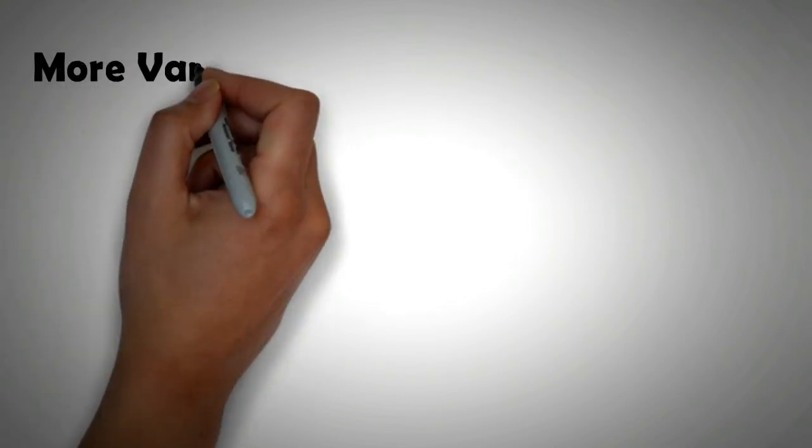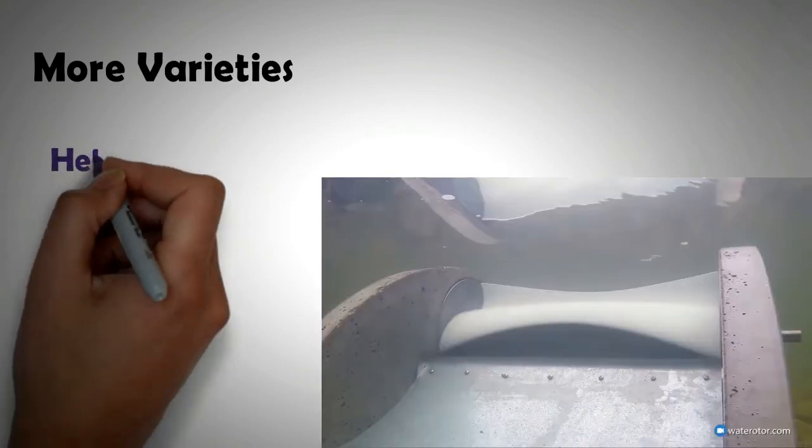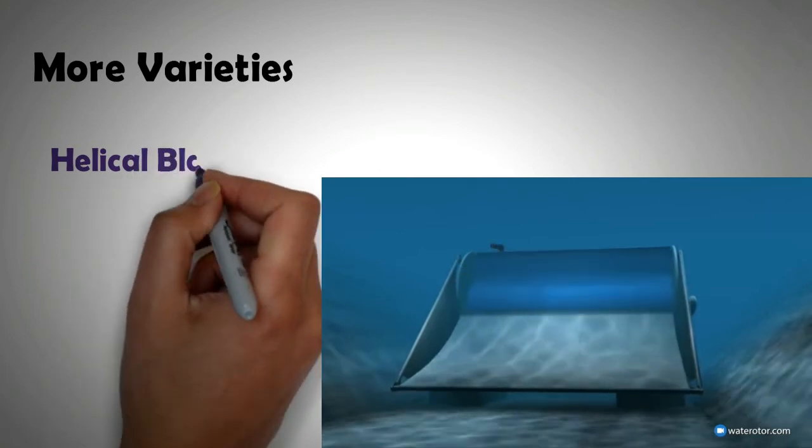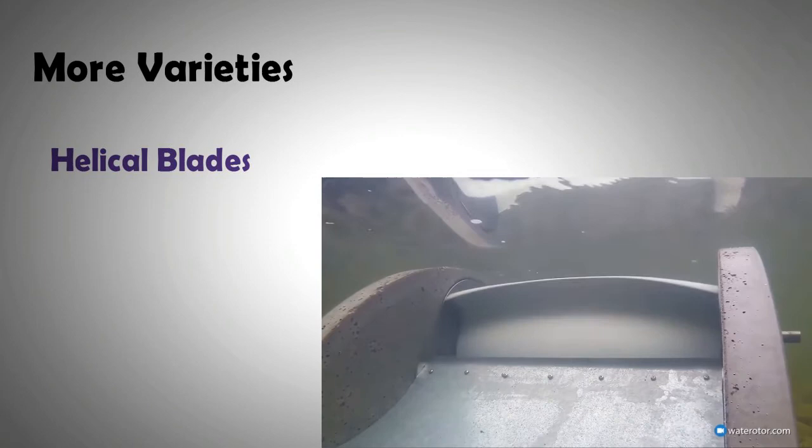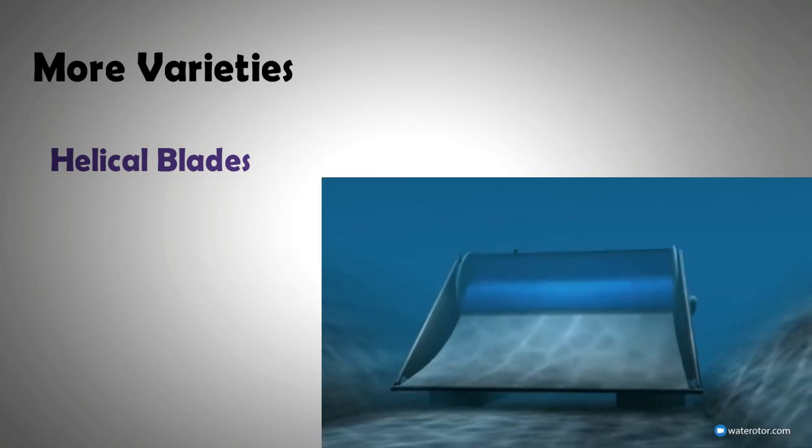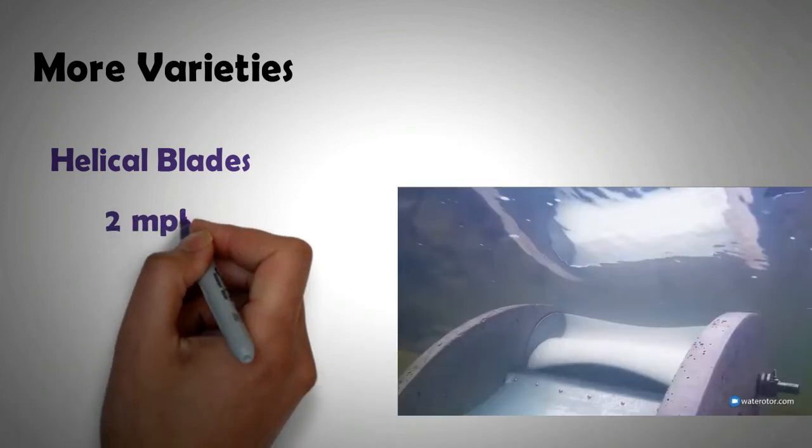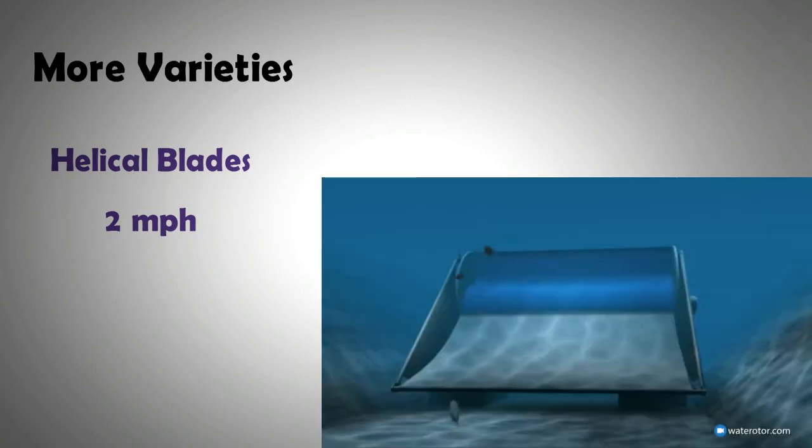Now, there are other varieties of turbines also available particularly at the micro scale. There are turbines with helical blades that can even run in the shallowest and slowest of running water. For instance, the motor rotor turbine can utilize water as slow as two miles per hour.